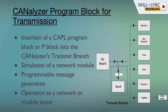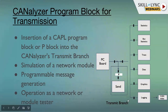We will be looking at the IG block, generator block, replay block, and CAN block. This is a transmission branch, where each one is indicated with a small alphabetical letter. When sending the IG block it's marked as 'ig', the generator block as 'g', and the replay block as 'r'. To insert CAPL programming, right-click the button and insert CAPL programming — the 'p' mark will appear for the programmable message generation.